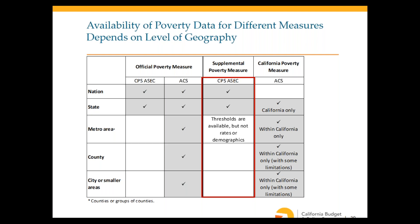The California Poverty Measure was developed specifically to provide supplemental-type poverty data at the level of counties, metro areas, and regions. It can be used to look at poverty definitely down to the county level, with some smaller counties combined due to data limitations. The CPM also uses county-level poverty thresholds rather than metro-area thresholds, making them more geographically specific.